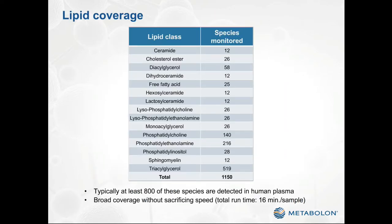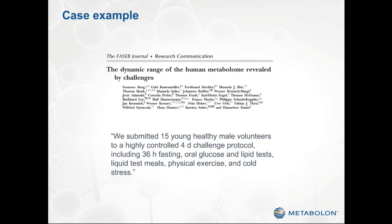Finally, the Complex Lipid Panel provides broad coverage of over 1,100 typical mammalian lipids. At least 800 of these are routinely detected in human plasma. Importantly, this broad coverage is provided without sacrificing the speed of the analysis, which is another common shortfall of comprehensive broad-coverage lipidomic profiling methods. I'd now like to go into a case example in which the CLP was used to analyze human plasma samples.